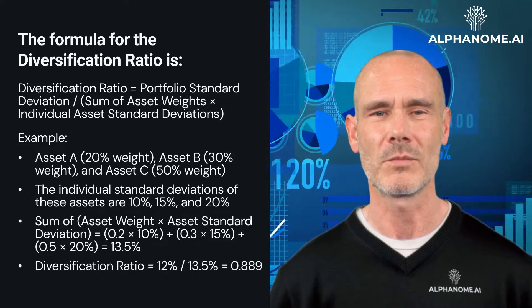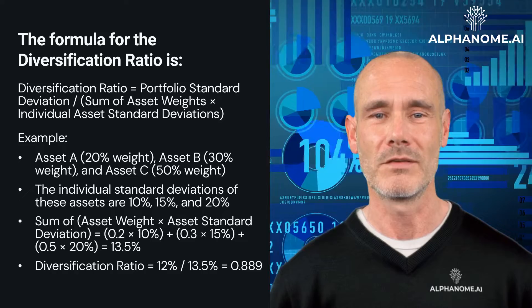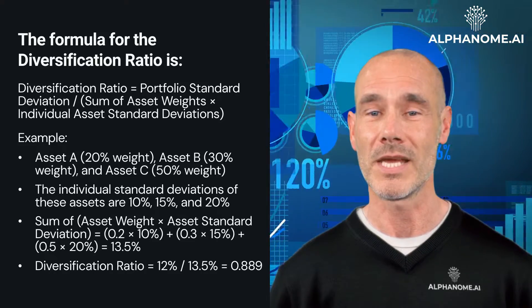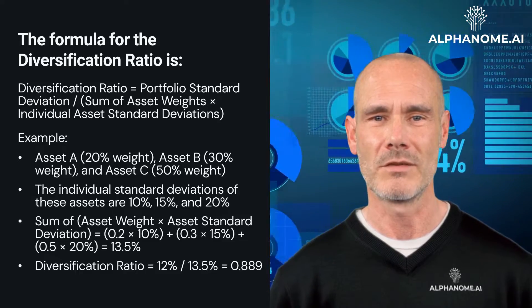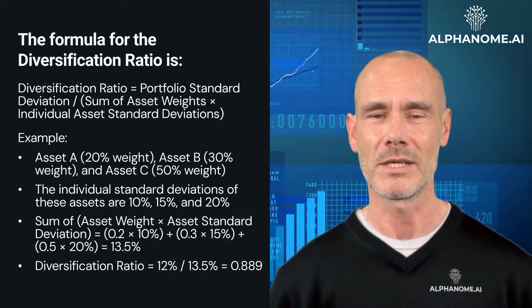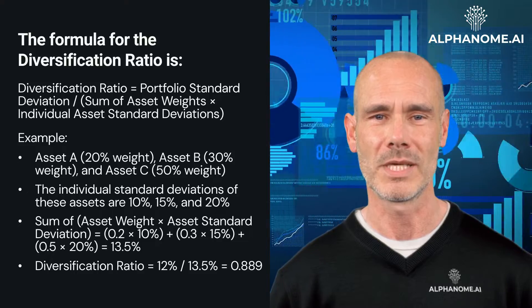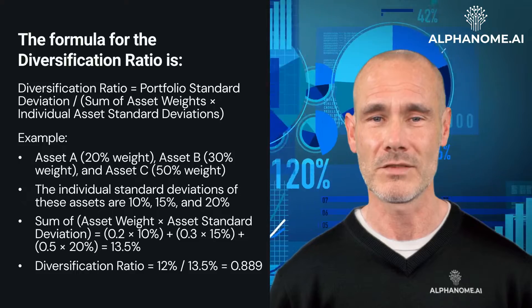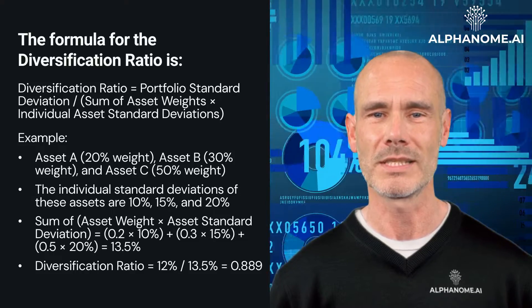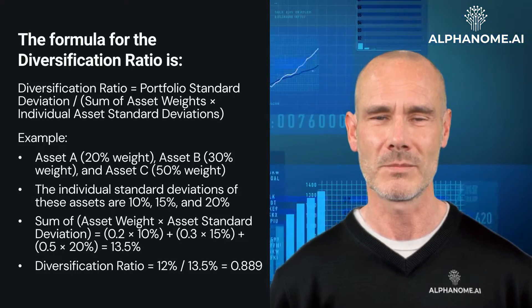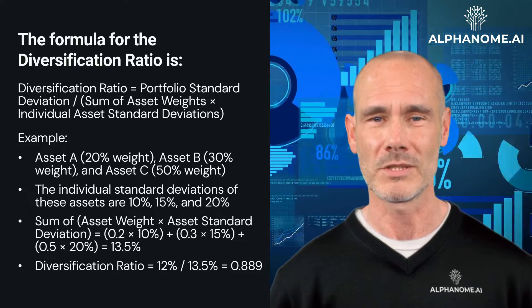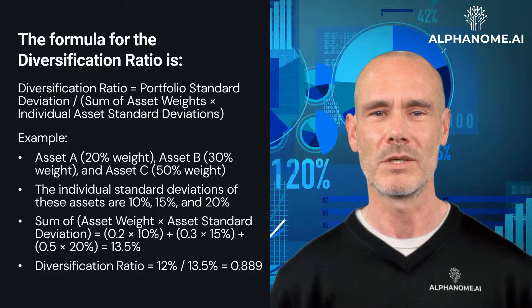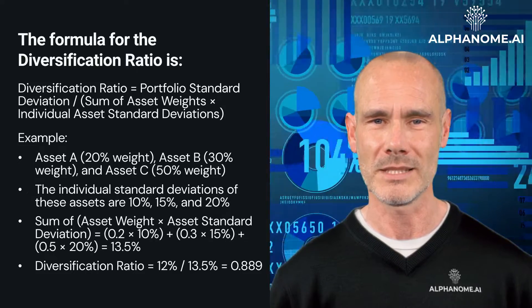Diversification ratio equals 12% divided by 13.5%, which equals 0.889. An ideal fully diversified portfolio would have a diversification ratio of 0, indicating that the portfolio's risk is completely eliminated through diversification. In our example, the diversification ratio of 0.889 suggests that the portfolio has achieved some level of diversification, reducing the overall risk by approximately 11.1% compared to a perfectly correlated portfolio with the same asset weights.